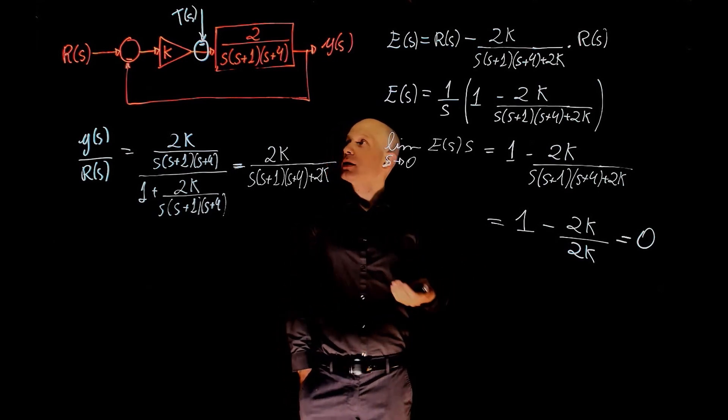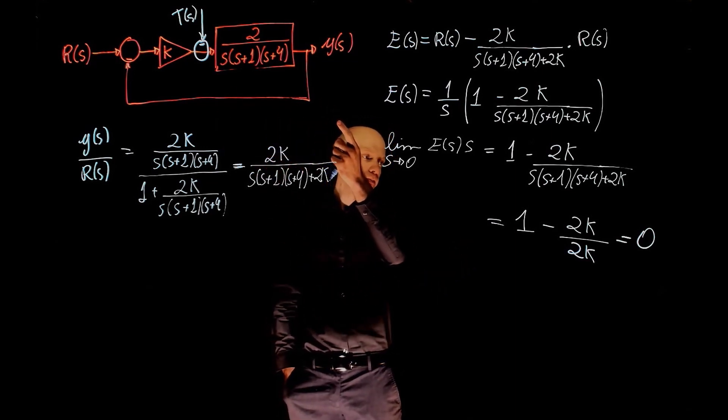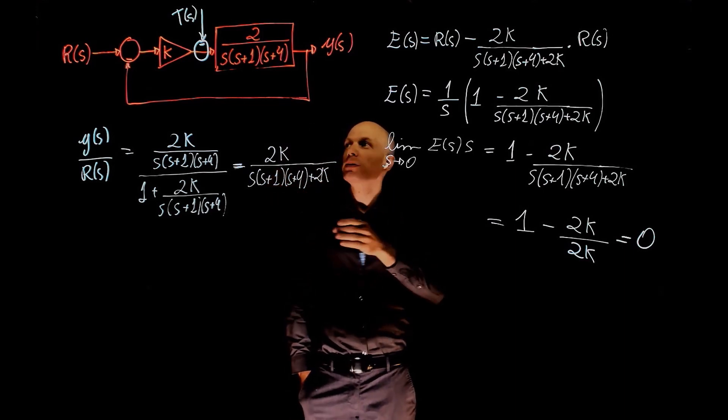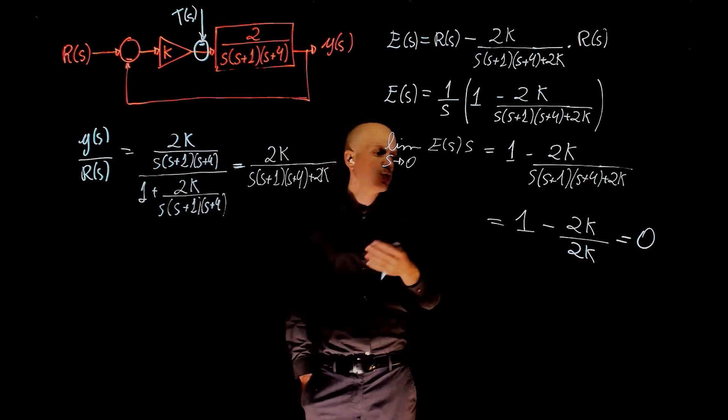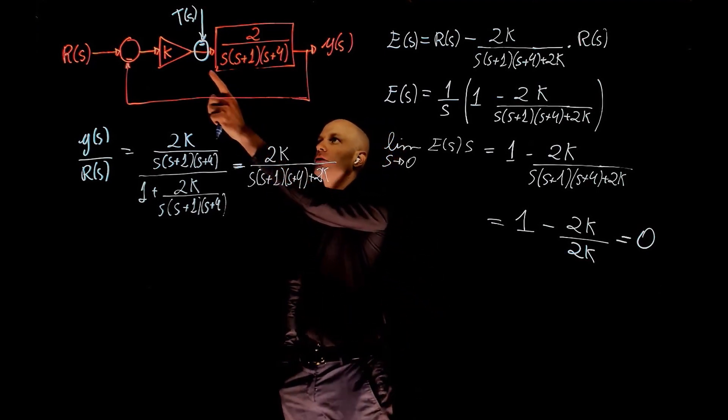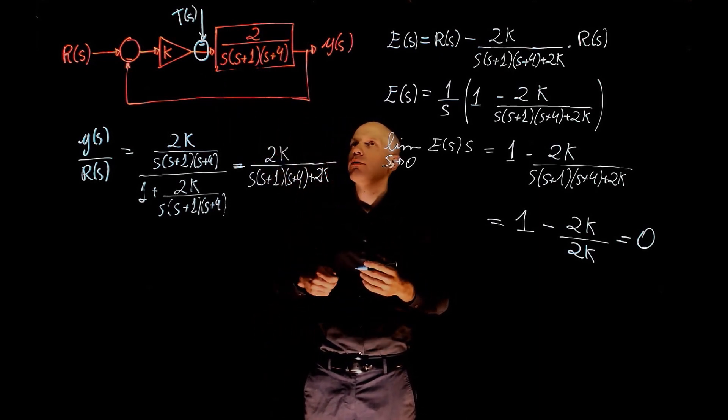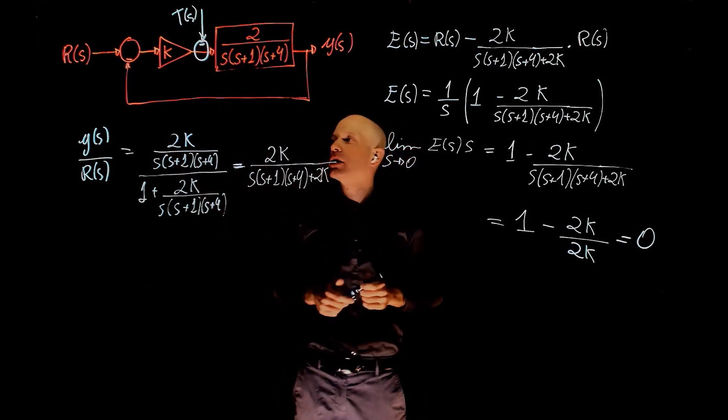Now we need to select an appropriate value of K to minimize the effect of the disturbance in the output. We know that K needs to be between 1 and 10. The question is which value now should we select so that the effect of the disturbance is minimized in the output. To do that, we now need to find the transfer function between Y and T and set R to 0.